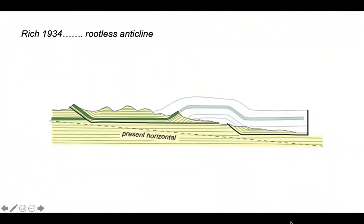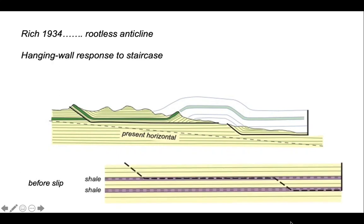So let's start with fault bend folding. This goes back to ideas from the Appalachians by Rich in the 1930s interpreting a fold as a rootless anticline. And here is his restored section for this, and he shows that the folding is a response of the hanging wall to this thrust slice moving up a staircase defined by flats along weak shale horizons connected by steeper segments called ramps that climb through other units.